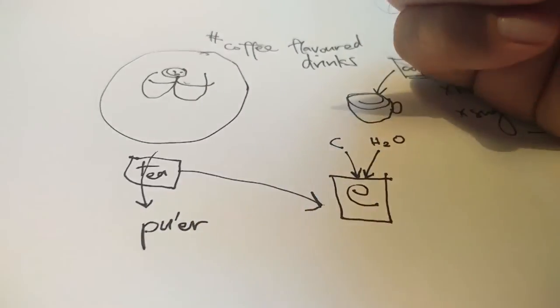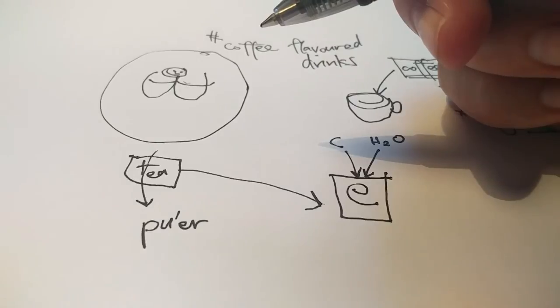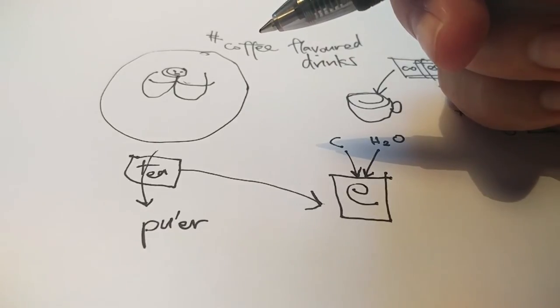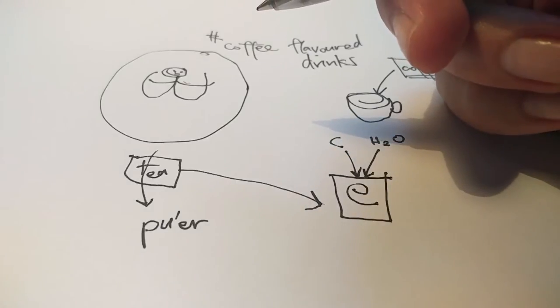Pu'er tea is made through secret processes. It's packaged through secret processes wherein they try and compact the tea leaves into bricks.